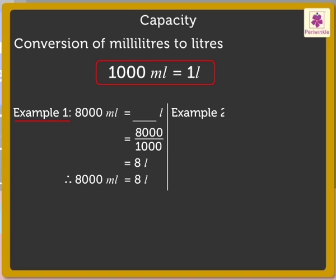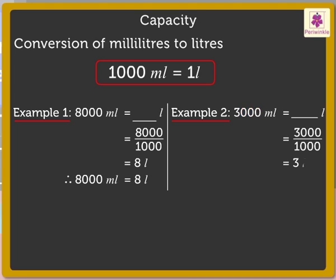Let's try one more example. Let's convert 3,000 milliliters into liters. So here, on dividing by 1000, or removing three zeros from the right-hand side of 3,000, we get the answer as 3 liters. Therefore, 3,000 milliliters is equal to 3 liters.